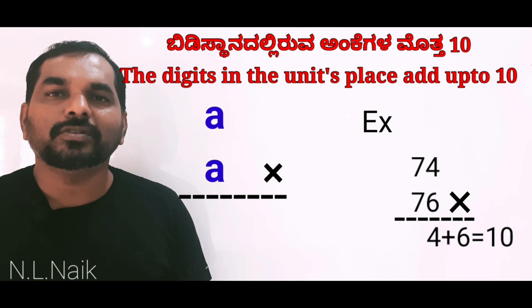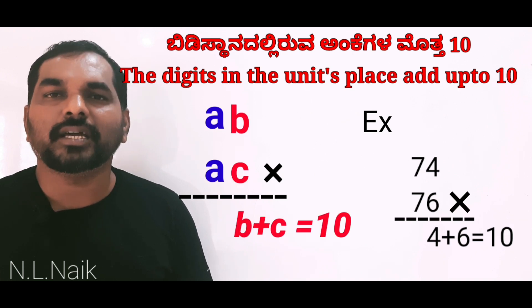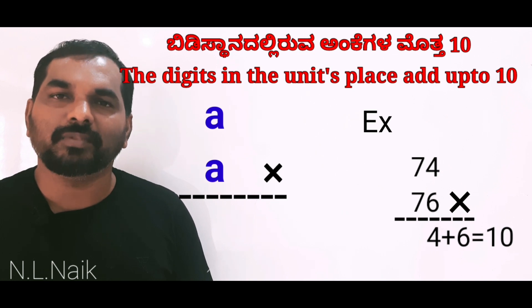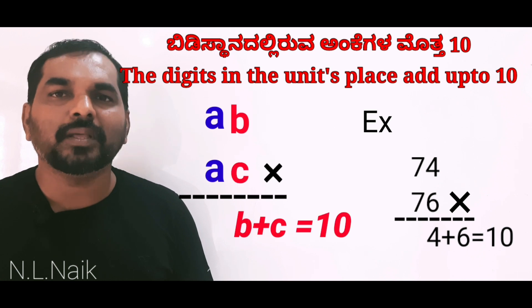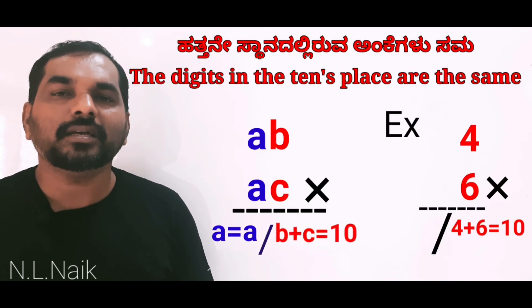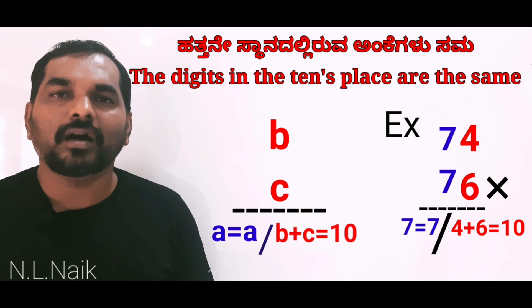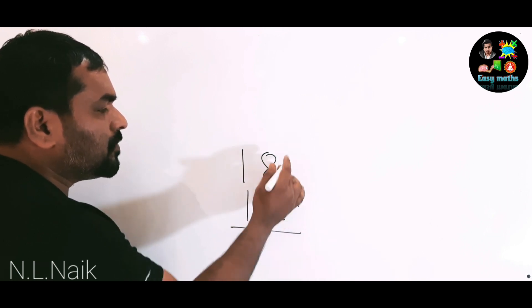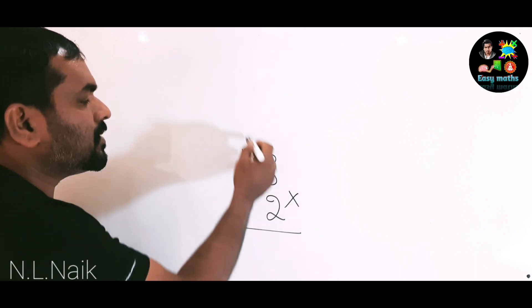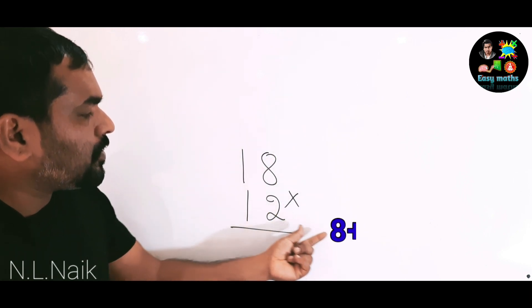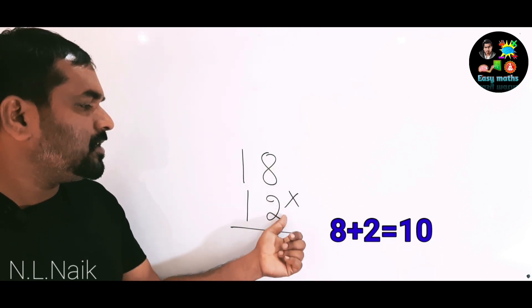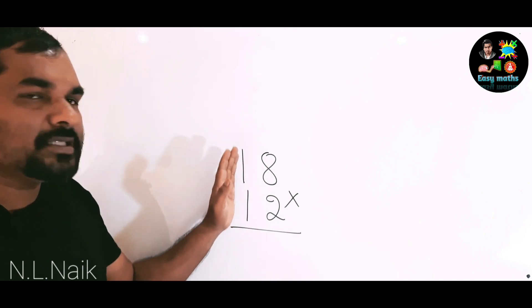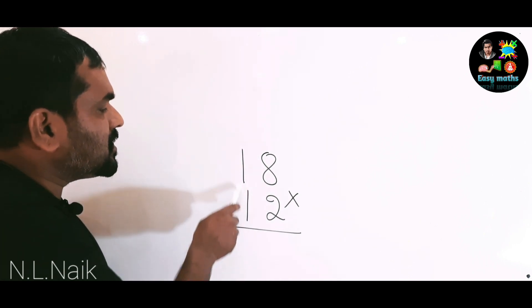So there are two conditions for this trick. The tens digit of both numbers must be the same, and the sum of the units digits must be equal to 10.